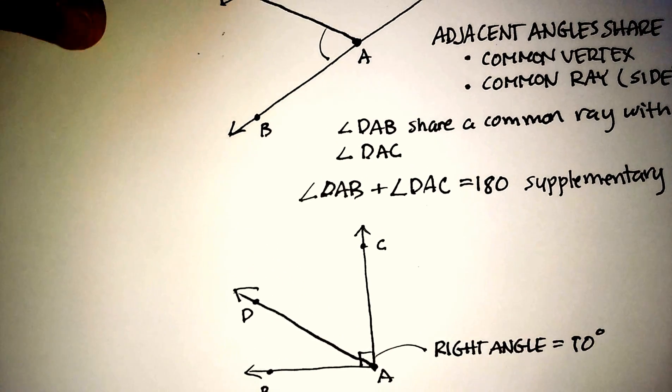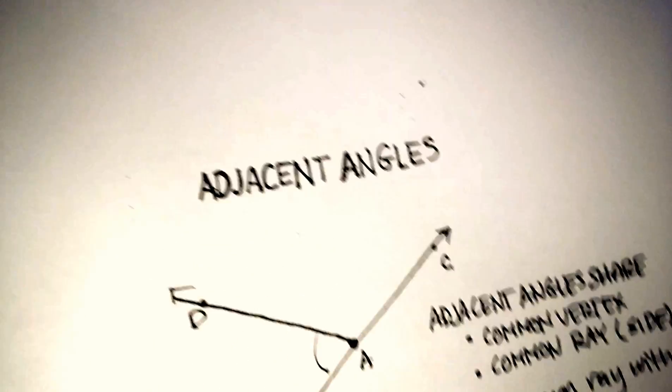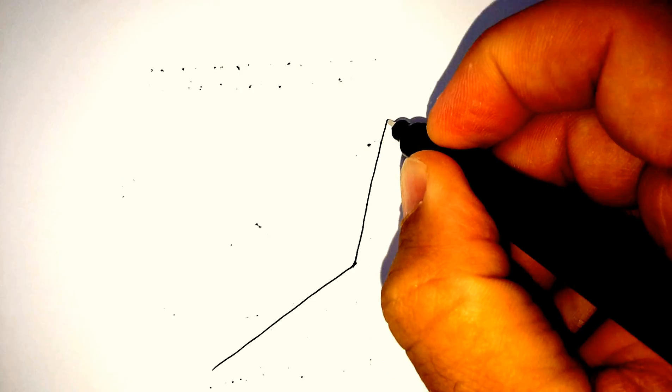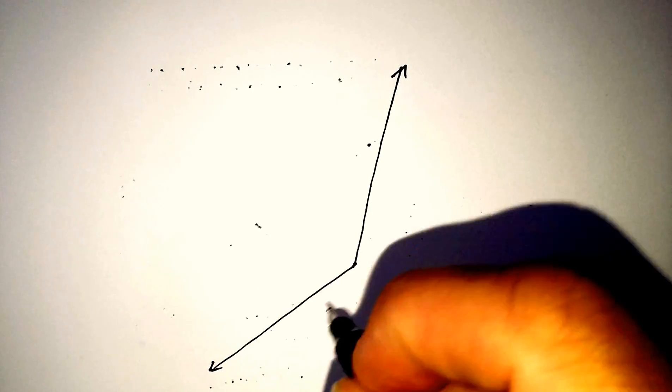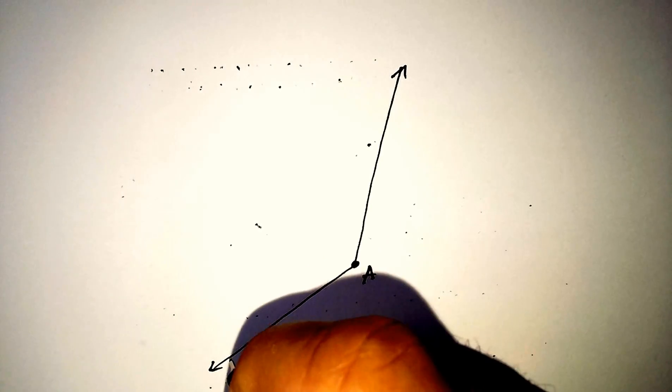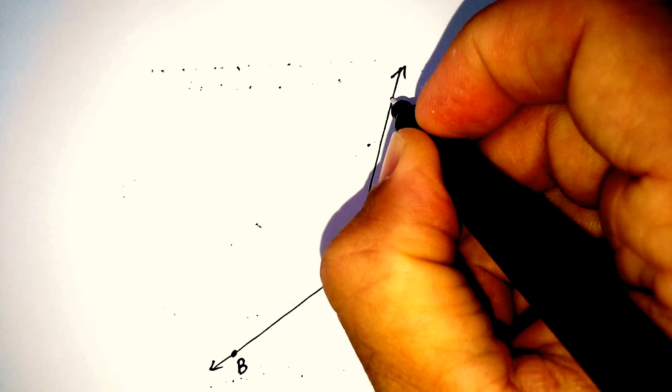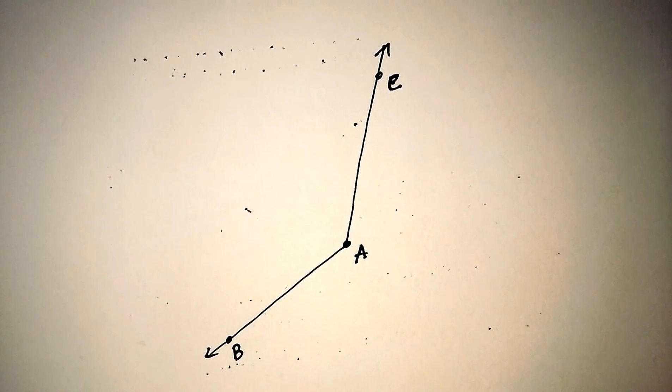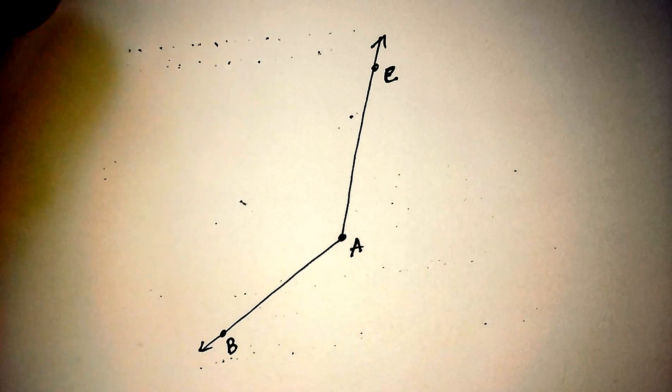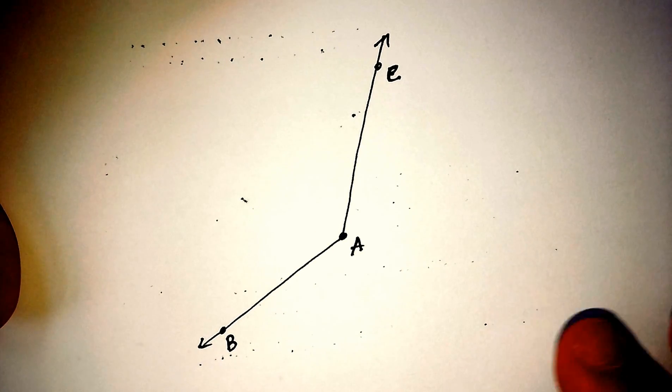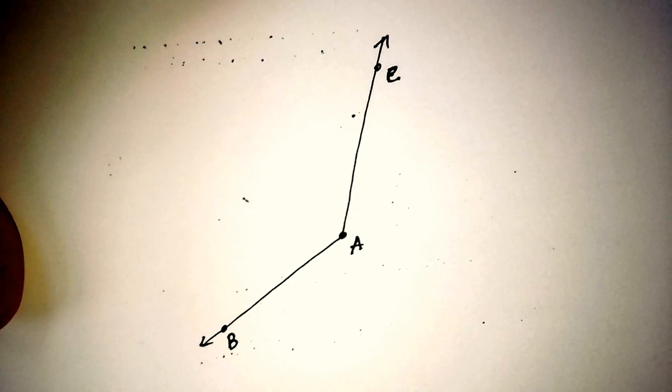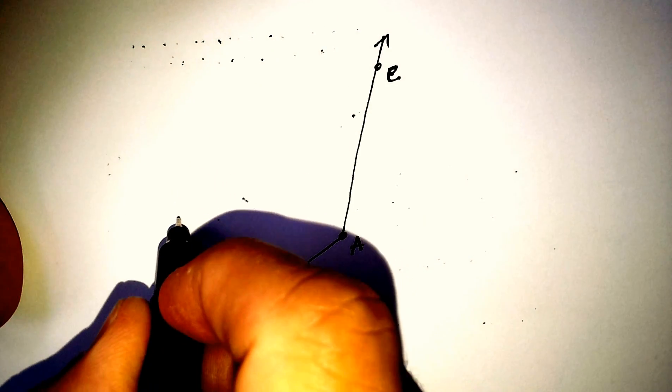But it doesn't have to be 180 or 90 either. Again, let me show you another example. I can have adjacent angles. Now first of all, what kind of an angle is this one? We'll call that A, B, and C. What kind of an angle is this one? And if you said an obtuse angle, you'd be correct, because it's greater than 90 degrees.